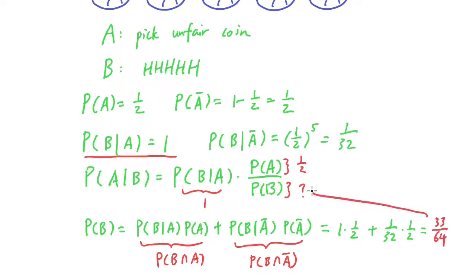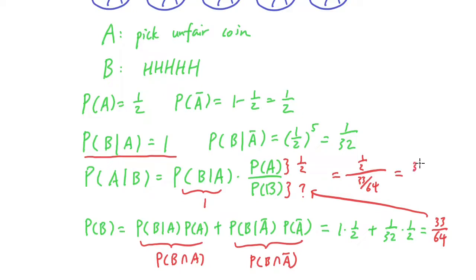Plugging back into Bayes' rule, the numerator is one half, divided by 33 over 64, which gives us 32 over 33.